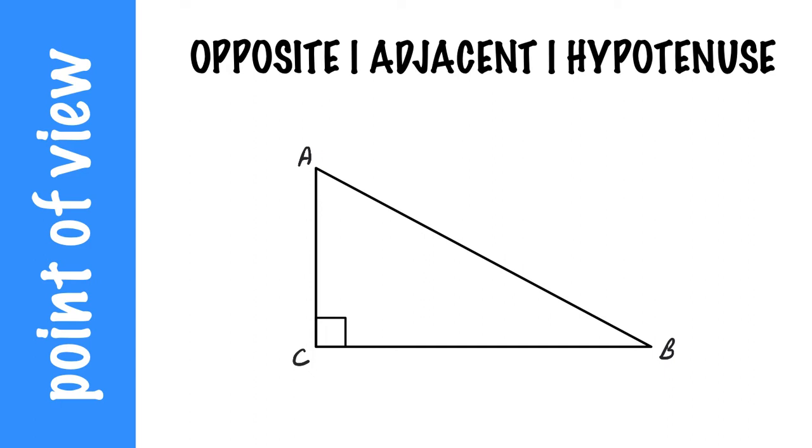We have three words: opposite, adjacent, and hypotenuse. The hypotenuse of any right triangle is always going to be opposite the right angle. So the hypotenuse is always going to be in this position. It never changes.